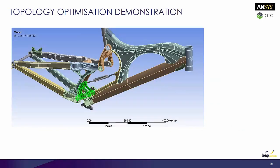So what I'll do now is a demonstration of topology optimization. We're going to take the part shown there in green — it's from a mountain bike. We're going to put some loads on it and then see what sort of shape we can come up with after it's been topologically optimised.